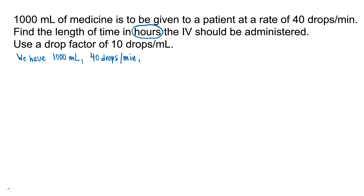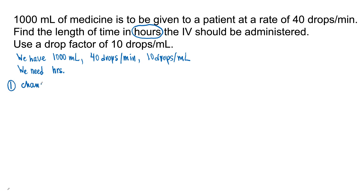Then we have a drop factor: 10 drops per ml. We need hours. How can we get to hours? It looks like the conversion factor 40 drops per minute will connect us to time, but we need to have drops first. So the first thing you are going to do is change milliliters to drops.